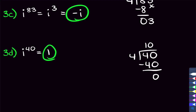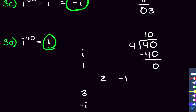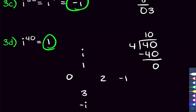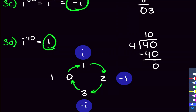Here's a quick way to memorize this: remainder 1 gives i, remainder 2 gives negative 1, remainder 3 gives negative i, and remainder 0 gives 1 — same as i to the fourth. I just make it sing-songy in my head: i, negative 1, negative i, 1. That way I always know the order and can solve any of these problems.